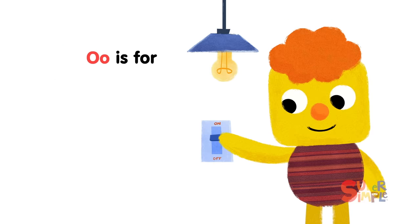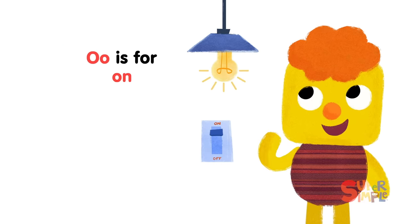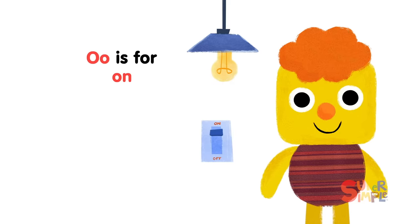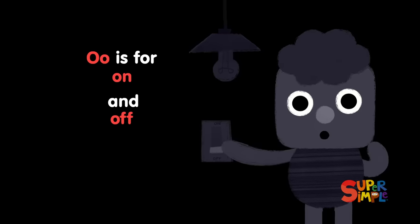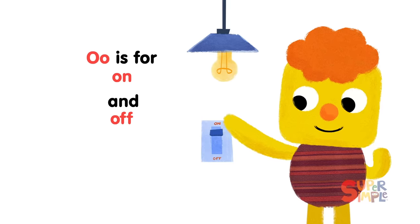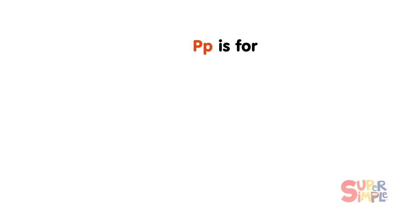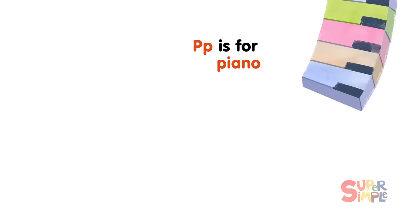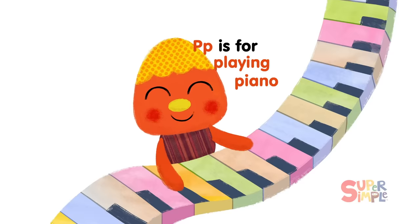O is for On and Off. P is for Piano, Playing Piano.